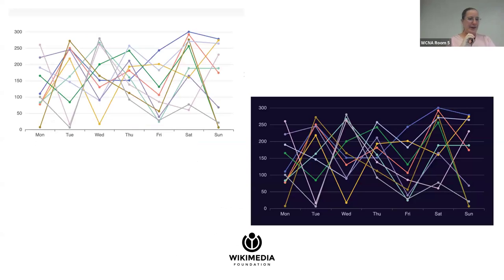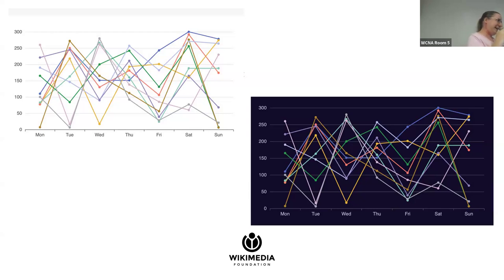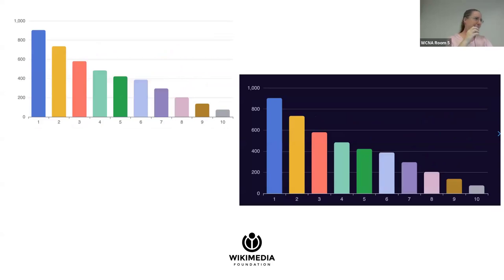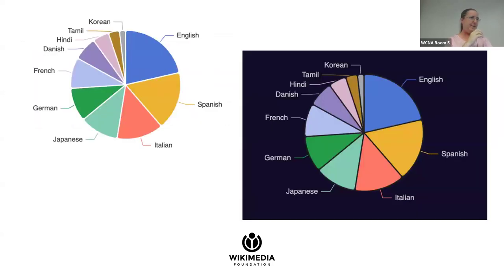These are some designs we're working on. There'll be a default color scheme, but if you want to customize it — for example, based on political parties where certain colors have meaning — then you can do that. There'll be a default that works with both dark mode and light mode, and we're keeping color blindness in mind. This would be a bar chart and a pie chart.